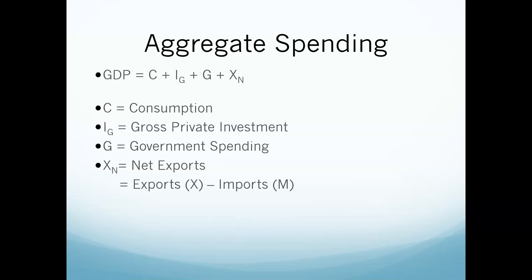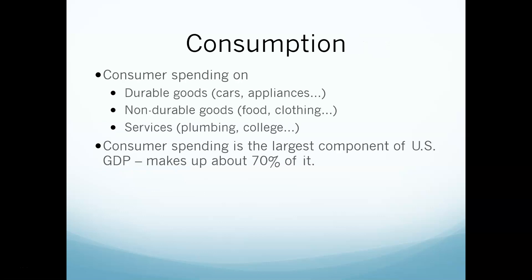When we measure GDP, we use what we call aggregate spending — all the spending happening in the economy. We divide it into four broad categories: C plus IG plus G plus XN. That's consumption, gross private investment (business spending), G for government spending, and XN for net exports.